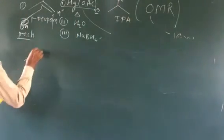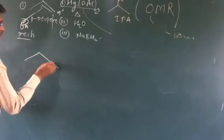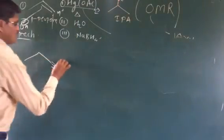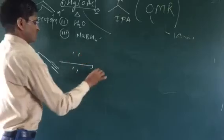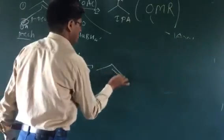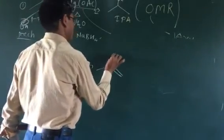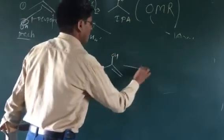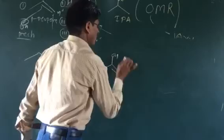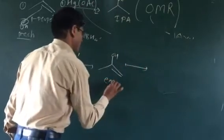When we have an alkyne as starting material, the same steps apply. The same whole mechanism generates an OH-containing intermediate. The same oxymercuration-reduction sequence is followed.